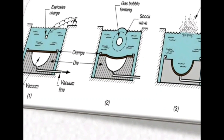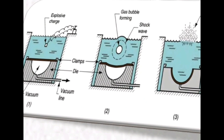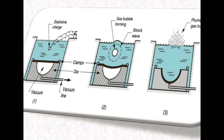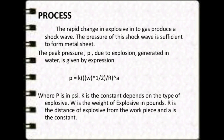This series of images explains the explosive forming process. The first image shows the setup before detonation is initiated, the second image shows during detonation, and the third image shows after detonation, where the sheet metal has been formed in the die.